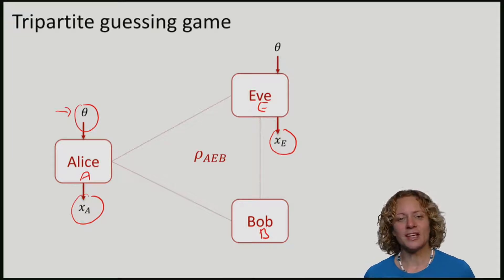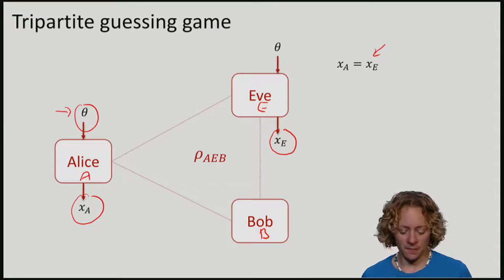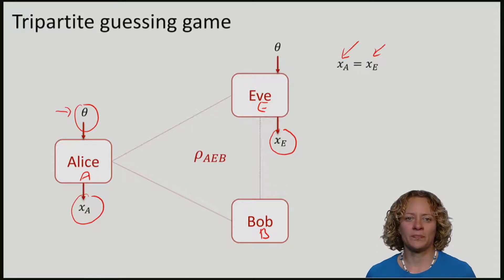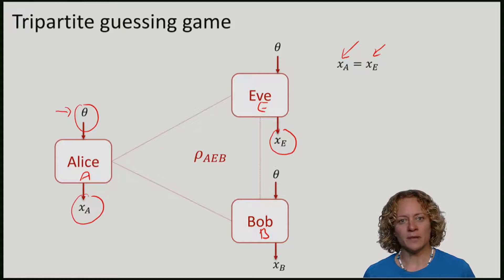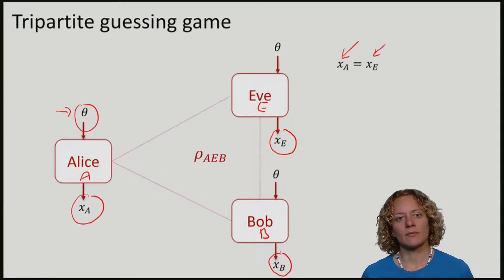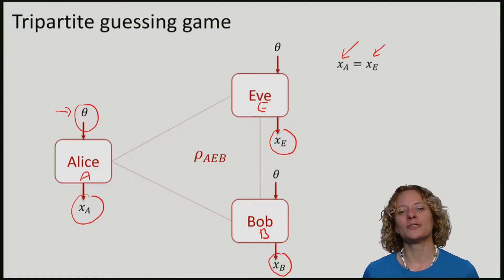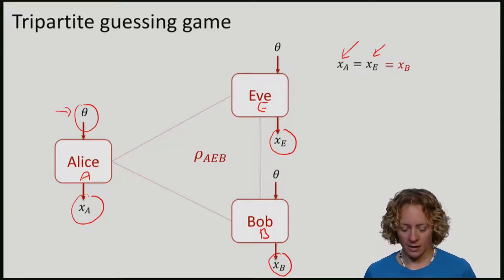In our uncertainty game, Eve won the game if her guess x_E is equal to Alice's outcome x_A. In this tripartite guessing game, we will now do the same for Bob. We will also tell Bob what the basis was and he is going to measure in some basis depending on θ and produce an answer x_B. Now, Eve and Bob together win the game if and only if all of the measurement outcomes are the same. Eve can guess Alice's answer correctly and also Bob can guess Alice's answer correctly.